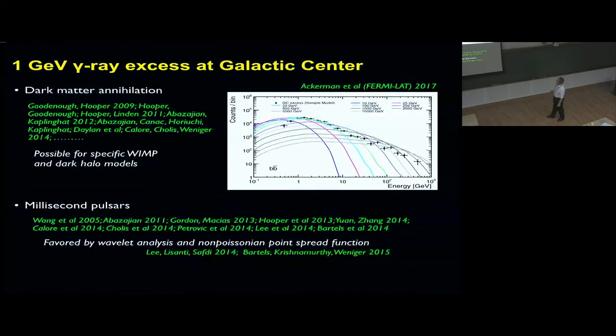Here are fits to the dark matter to the excess. There's a little problem with small energies. But it's possible for a dark matter particle around 10 GeV, maybe going into b-bbar and specific halo models. The competitor from an astrophysical explanation is millisecond pulsars and is actually favored by wavelet analysis, non-Poissonian point spread functions. There are currently ideas and proposals out to actually go and find these pulsars.